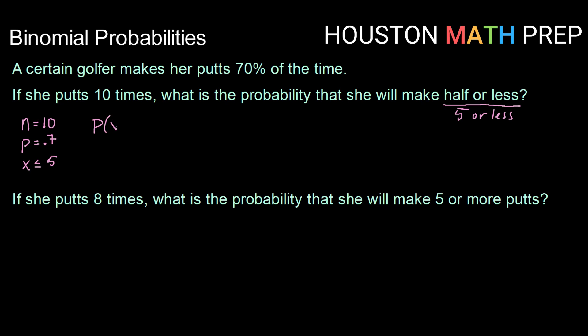So our probability that x is less than or equal to 5 can be calculated by doing binomial CDF. Since we are doing less than or equal to, that would be a cumulative distribution function of n, which is 10, p, which is 0.7, x, which is 5. And our probability there will be 0.1503.